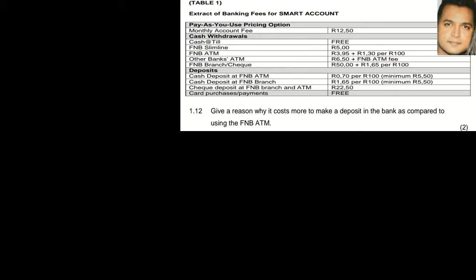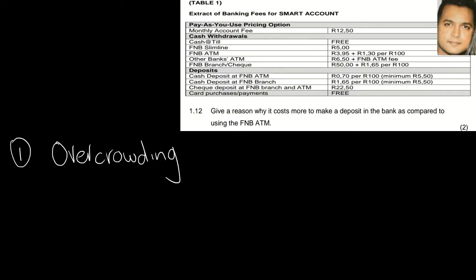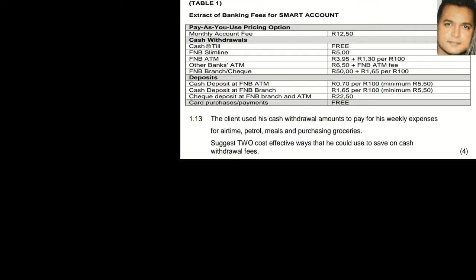Question 1.12 asks why it costs more to make a deposit in the bank compared to using the FNB ATM. Basically, the bank charges a higher fee for in-branch transactions to prevent overcrowding — the ATM is a faster and better way to transact.